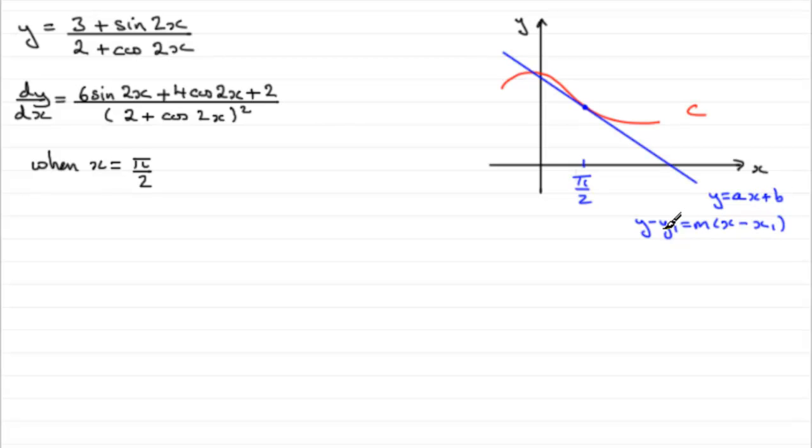Remember, x1, y1 is a point on your curve. I've already got x1. It's this point here, π/2. The problem is, I haven't got what y1 is, the y-coordinate that's associated with x equaling π/2. So we're going to need to find that anyway.